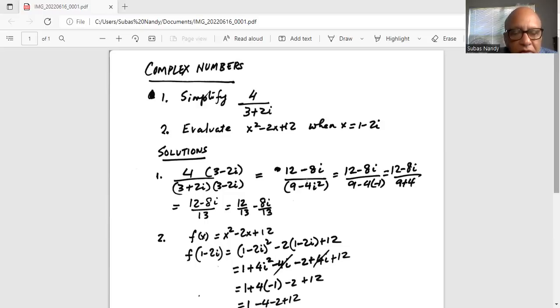So eventually it transforms to 12 divided by 13, the first term minus 8 divided by 13i. That is the simplified form of 4 divided by 3 plus 2i.